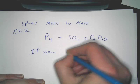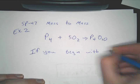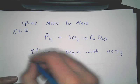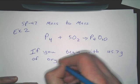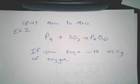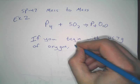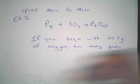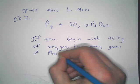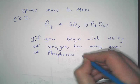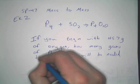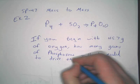If you begin with 45.7 grams, is that the number I used last time? It might be. 45.7 grams of oxygen. If you begin with 45.7 grams of oxygen. Again, how many grams of phosphorus will be needed to drive the reaction to completion?